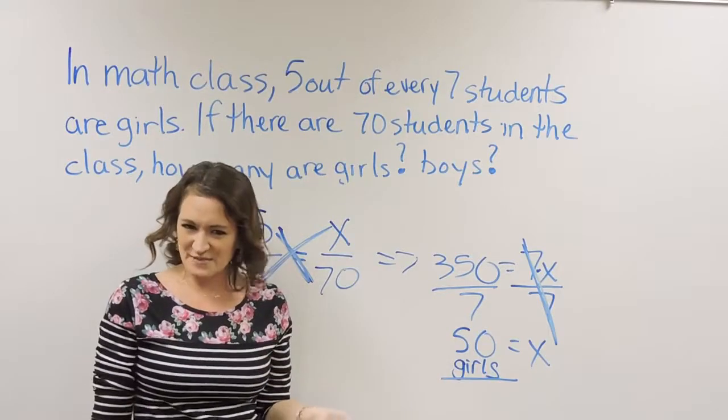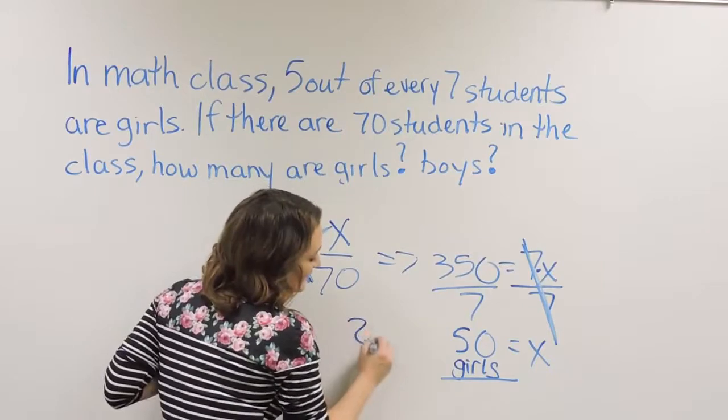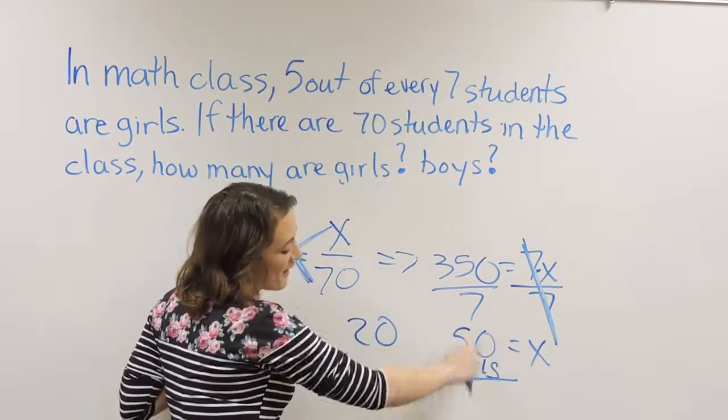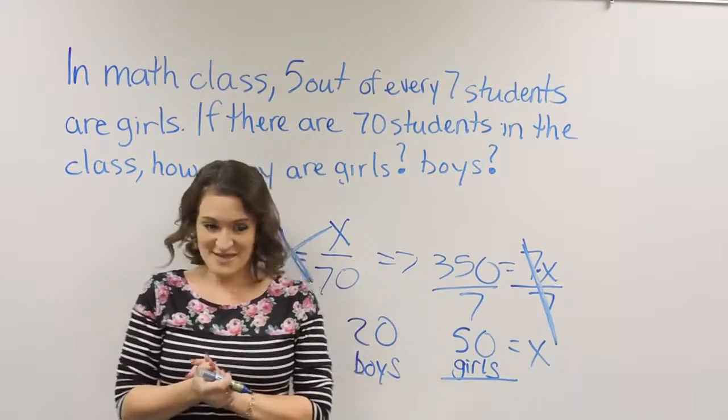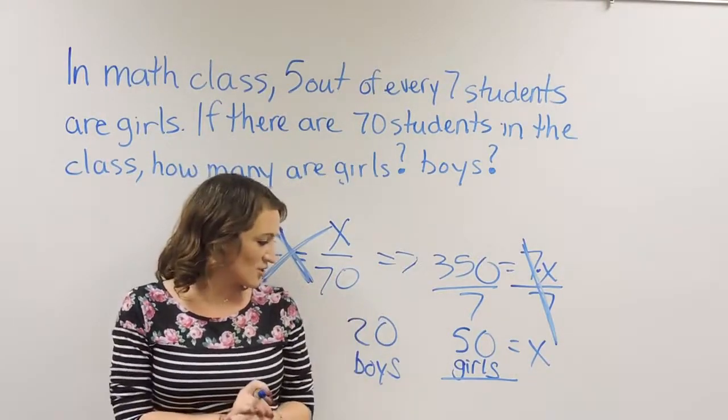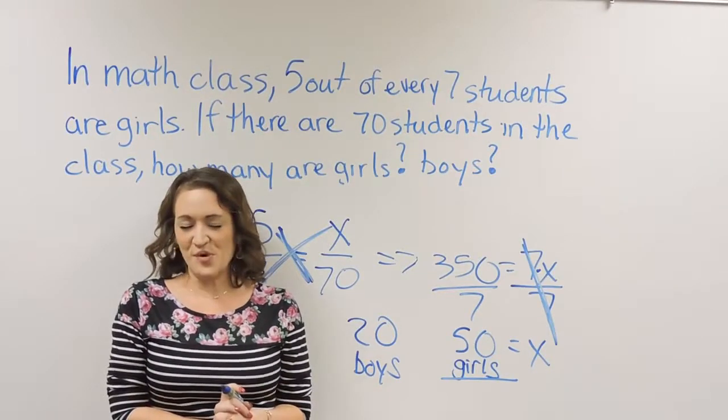So if 50 out of 70 students are girls, the leftover has to be boys. 70 minus 50 gives us 20. So if we have 50 girls, then we have 20 boys. A 50 to 20 ratio—girls completely win, more girls than boys.